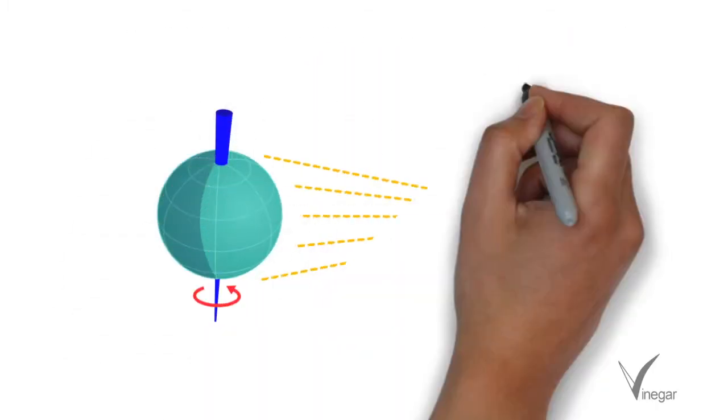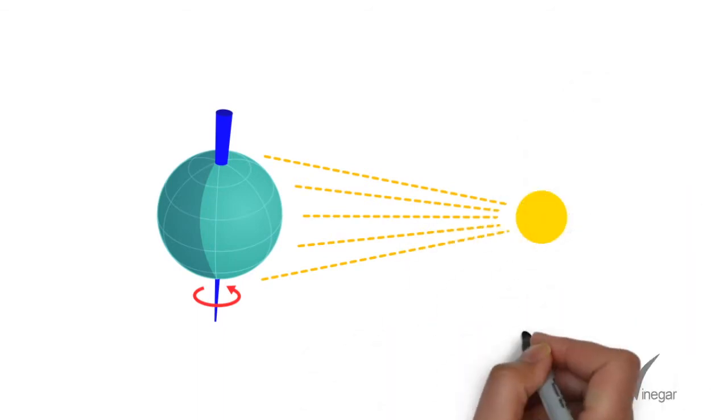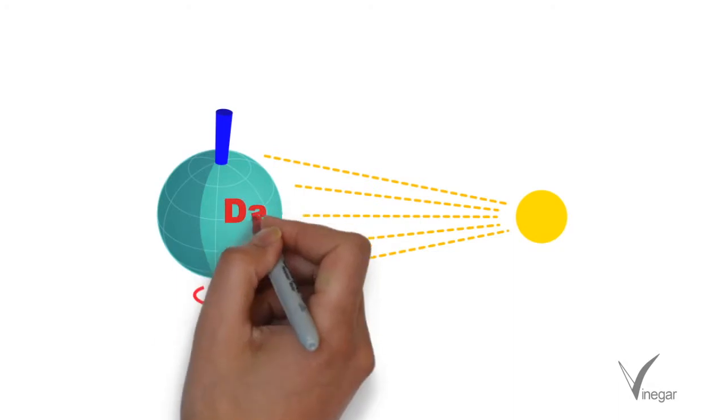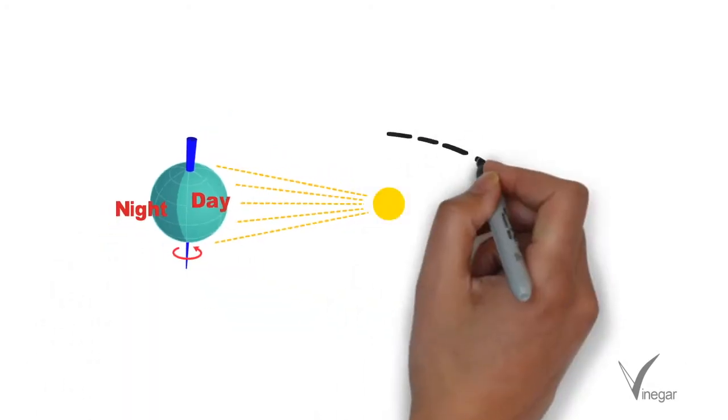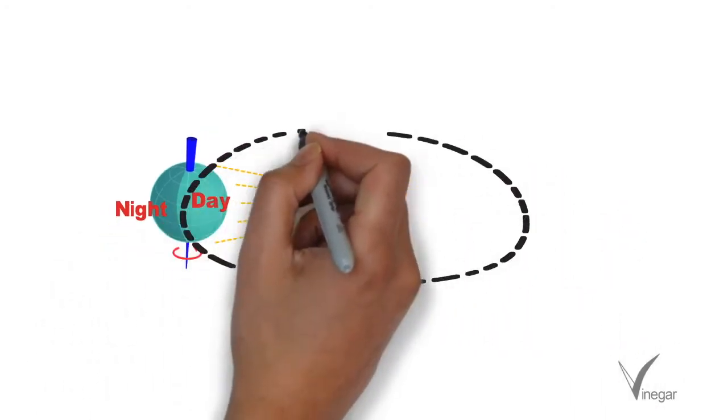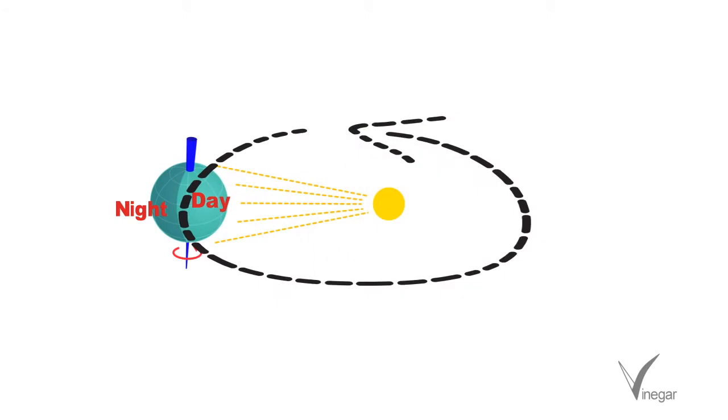The earth rotates on its axis from west to east direction and completes this in 24 hours. And this rotation causes day and night. Earth revolves around the sun in 365 and 1/4 of a day and this causes seasons and years.